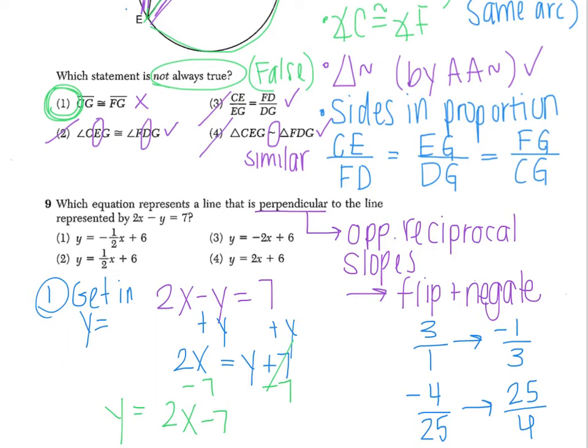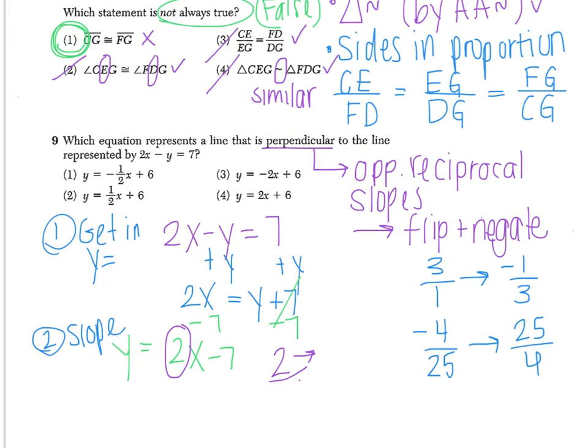My second step is to find the slope. Looking at this equation, I know that the slope is always in front of the X term. So if I take a slope of two and I want its opposite reciprocal, two is actually two over one. So when I flip and negate, I put the one on the top, the two on the bottom, and a positive is now negated to become a negative. So I need to find a choice that has a negative one half as its slope. And I see that that's represented in choice one.